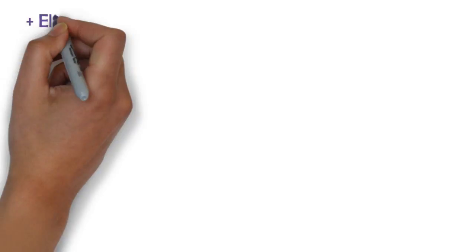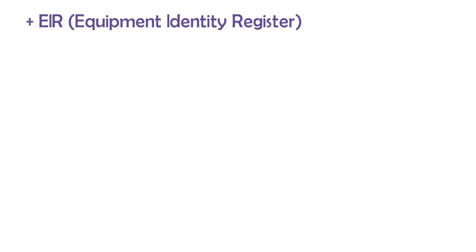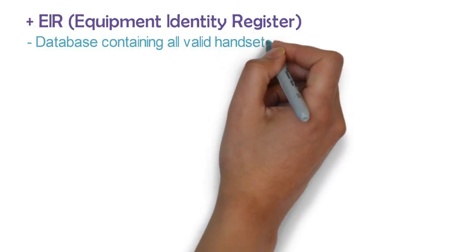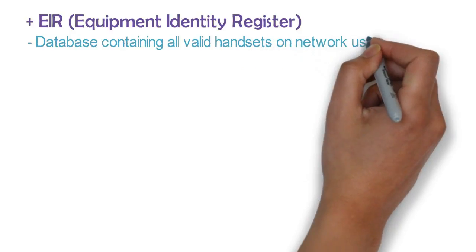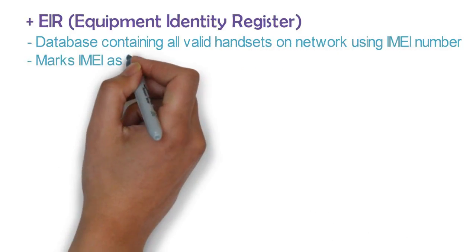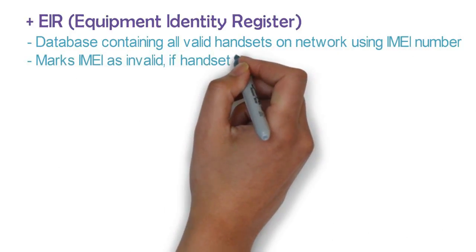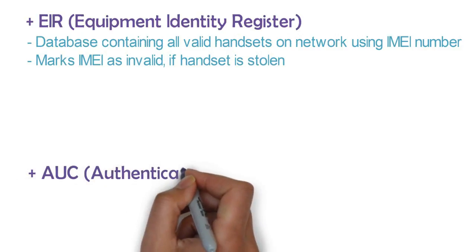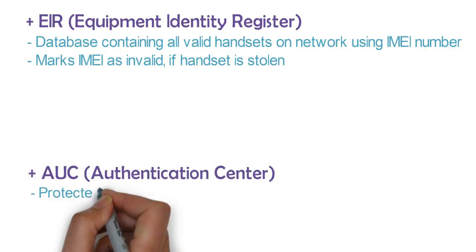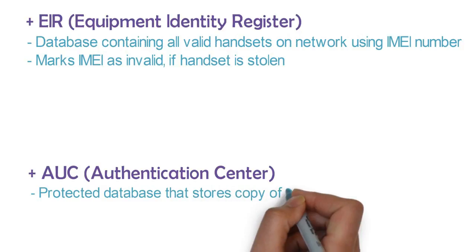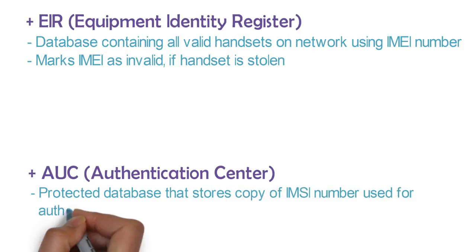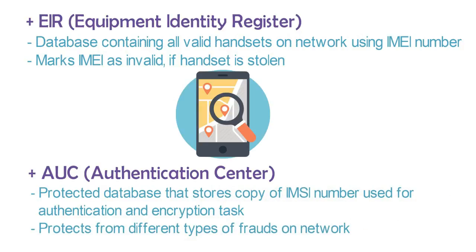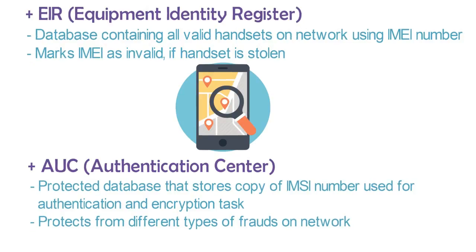The fourth element is the Equipment Identity Register (EIR) — a database containing all valid handsets on the network using IMEI numbers. It marks an IMEI as invalid if a handset is stolen. The fifth element is the Authentication Center (AuC) — a protected database that stores a copy of the IMSI number for authentication and encryption tasks, protecting against different types of fraud on the network.